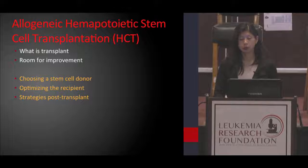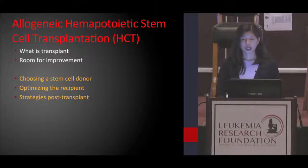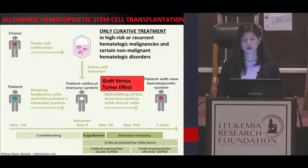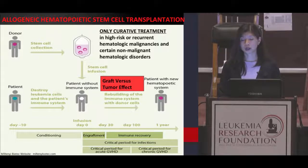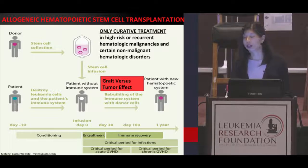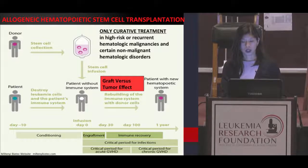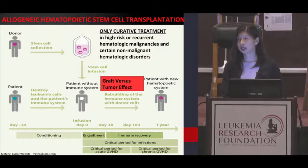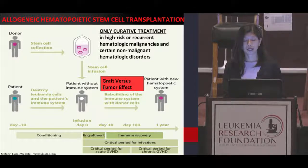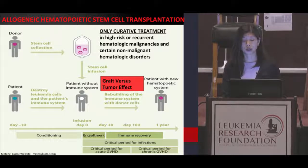We'll review what transplant is to make sure we're all on the same page, and we'll discuss areas for improvement, focusing on a few. Allogeneic stem cell transplantation is a transplantation using cells from a donor. It is the only curative treatment for high-risk or recurrent blood cancers as well as certain non-malignant blood disorders. This process requires a donor as your source of stem cells. In preparation for the transplant, the recipient will undergo conditioning chemotherapy. The purpose of this is to eradicate any residual leukemia cells, even in people who are in remission, and importantly, it also suppresses their immune system so that they will accept and not reject those donor stem cells.